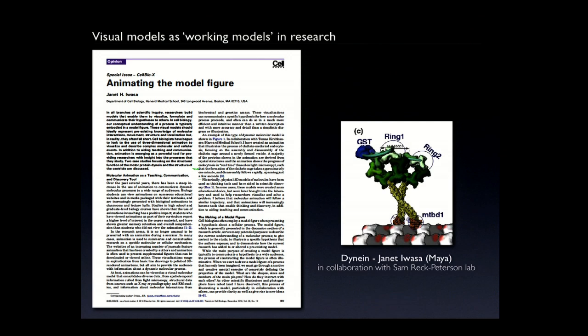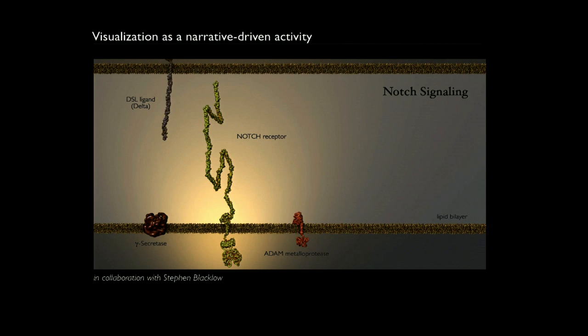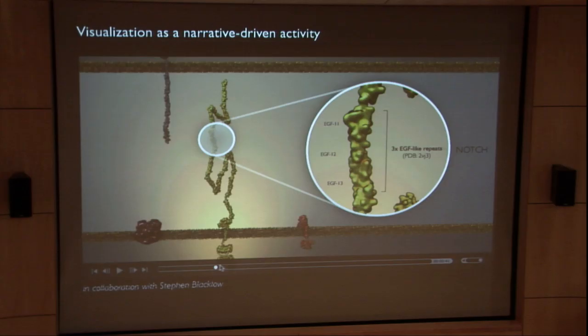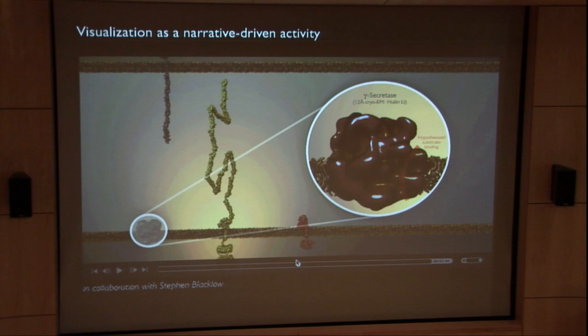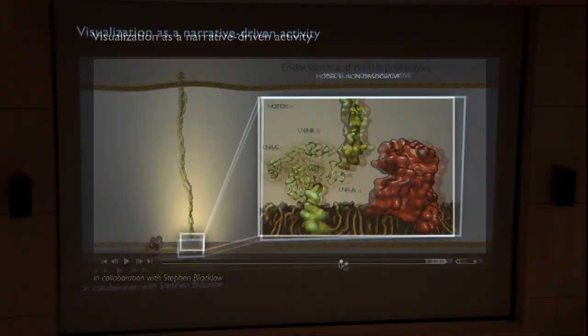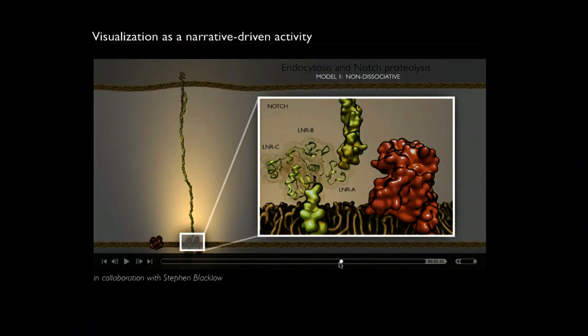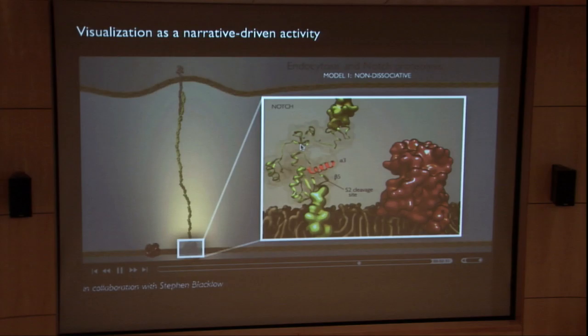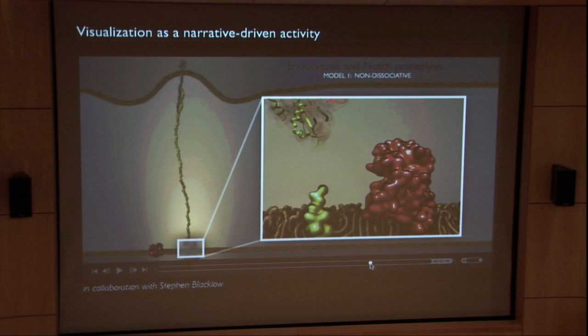The other end of the spectrum: this is the beginning of an animation we're doing for Steve Blacklow, who works on the structural elements of the notch pathway. The working model here is that endocytosis of the ligand in the ligand-presenting cell provides the motor force to pull on domains present in the receptor, and it's that unfolding — loosening up a structural element and making it available to a protease. Very specific — that's what we wanted to show, and those are the tools we used.